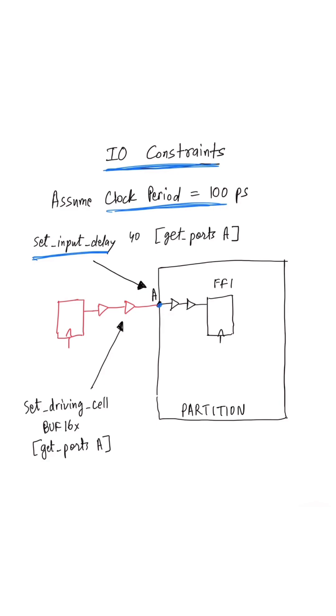In case of input ports, the driving flop will be outside the partition and the receiving flop will be inside the partition.